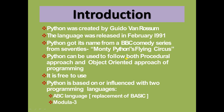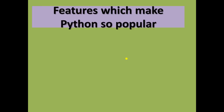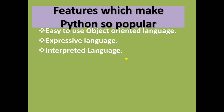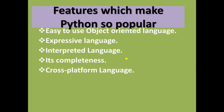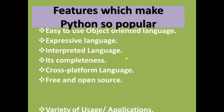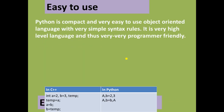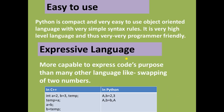The ABC language is the replacement of BASIC. The features which make Python so popular are: easy to use, object-oriented language, expressive language, interpreted language, completeness, cross-platform language, free and open source, and variety of usage or applications.